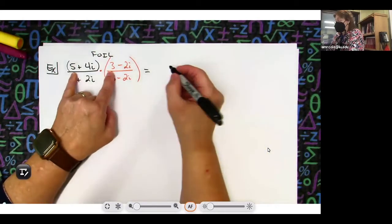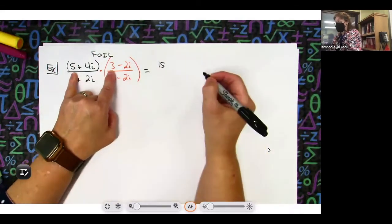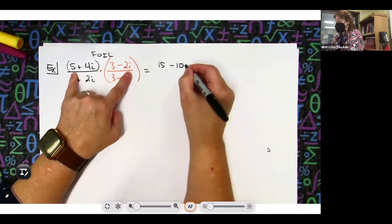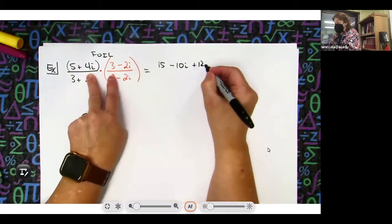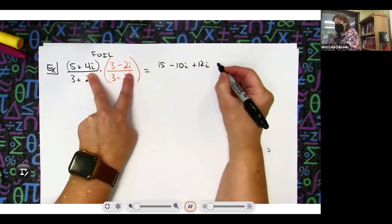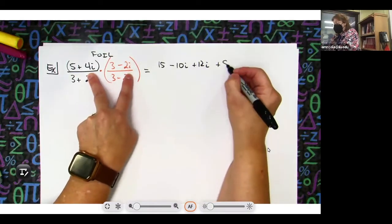First term 5 times 3 is 15. If I do outside term I have a minus 10i. If I do inside term I'll have a plus 12i. And if I do last term I'll have a plus 8i squared.